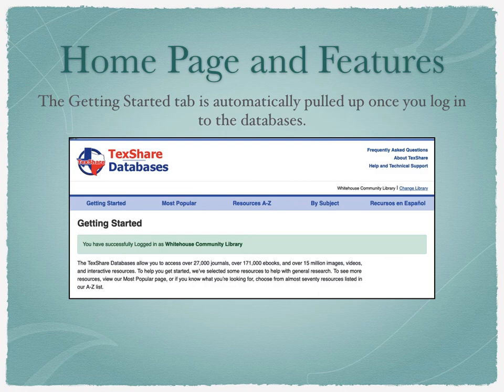If you know the specific name of a database or journal you want to look at, it is recommended that you find it via the Resources A to Z tab. The best way to start with a specific search will be through the By Subject tab. That is the tab we will click next.